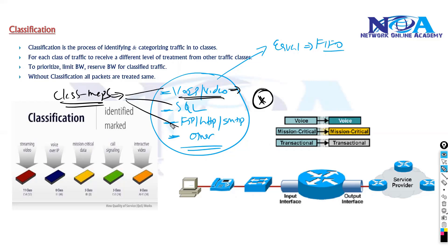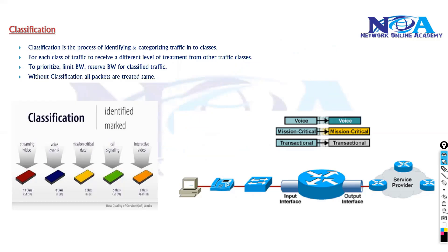Once we do classification, I can give priority to specific traffic, I can do policing, I can do shaping, I can do queuing, or I can drop excess traffic. Without classification all traffic is treated equally, and for each class of traffic we require a separate treatment.